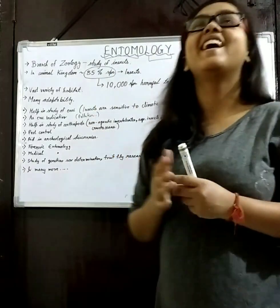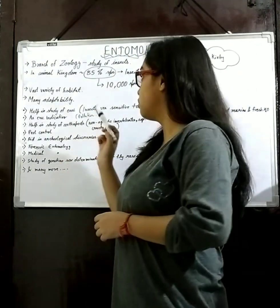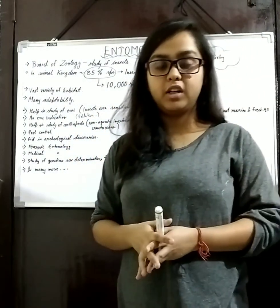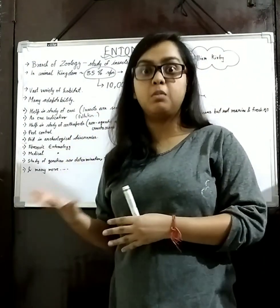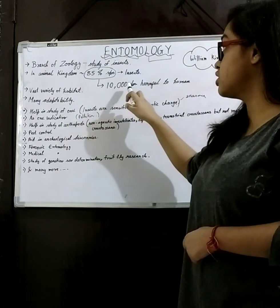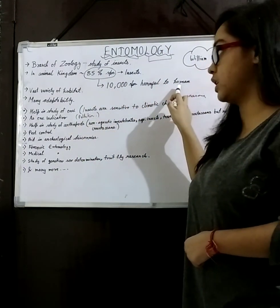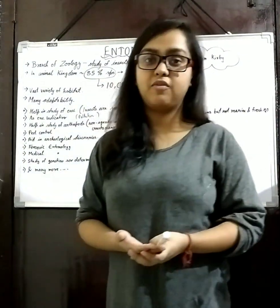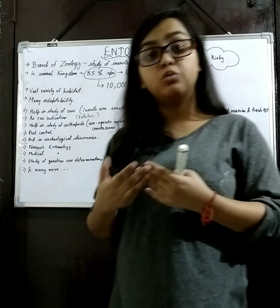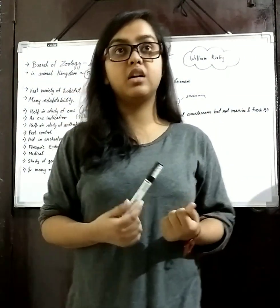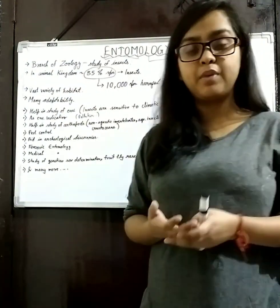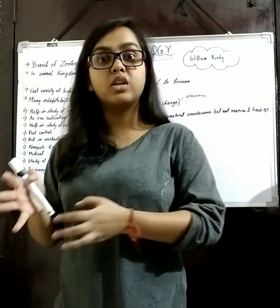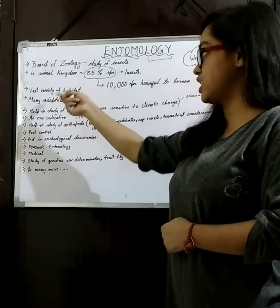In the animal kingdom, almost 85% of species are insects, which is a large quantity, so we need to know about them. Among these, there are 10,000 species that are harmful to humans. These insects survive in a vast variety of habitats, such as deep in the earth, in the ocean, or in high-temperature areas — even in high sulfur content environments.